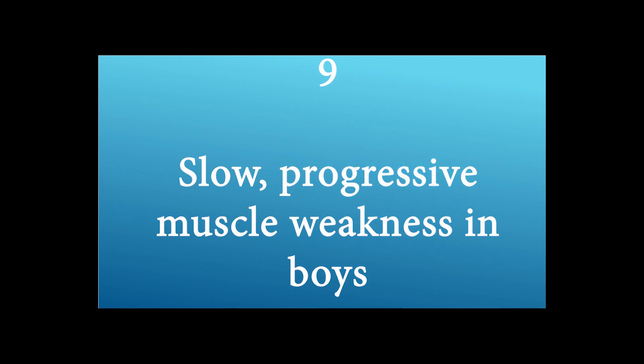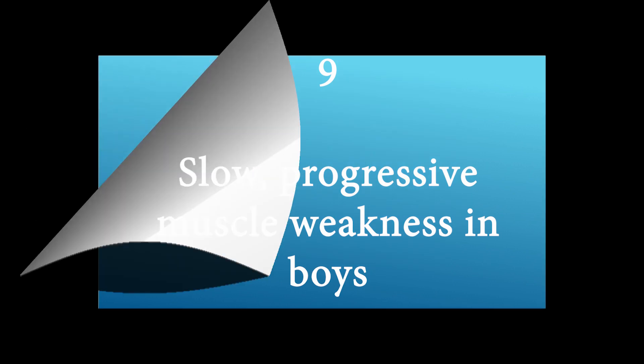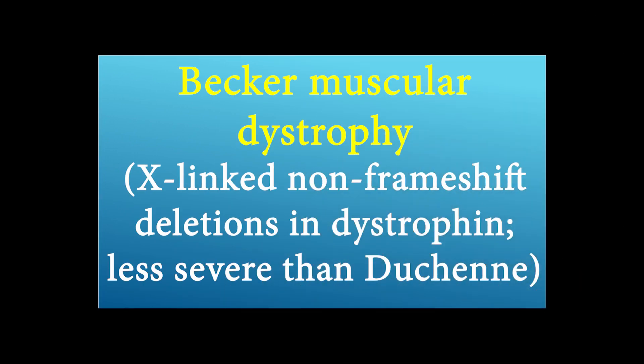Name the disease of these presentations: slow and progressive muscle weakness in boys. The disease is Becker muscular dystrophy — X-linked non-frameshift deletions in dystrophin, less severe than Duchenne.